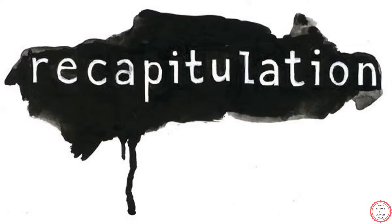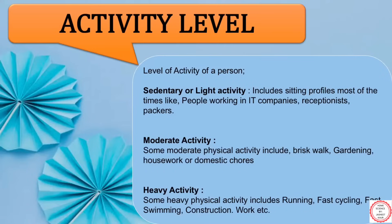Now let's recapitulate the key terms of this chapter which we have covered so far. Starting with activity level — the level of activity of a person is always divided into three categories. The first one is sedentary or light activity, second moderate activity, and third heavy activity. Sedentary activity includes those work profiles which mainly involve the person sitting most of the time, for example people working in IT companies, receptionists, or material packers.